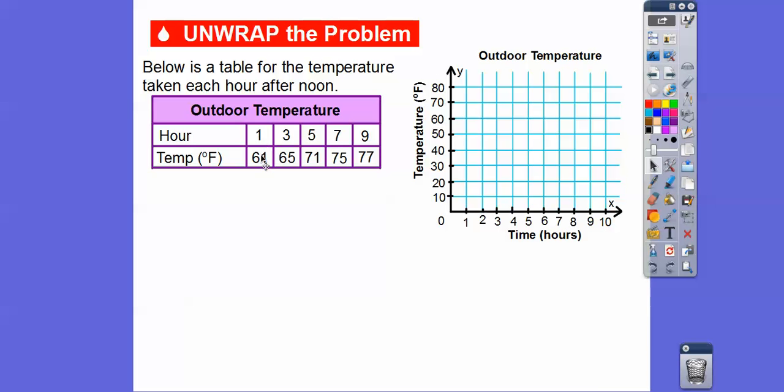The first hour is 61 degrees. The third hour is 65 degrees. You'll notice right here, this is our x-axis. Typically if you see a table that's written like this, the top row is your x-axis and the bottom row is your y-axis. Remember, x, y comes in alphabetical order. Since x comes before y in the alphabet, then the first set of numbers is typically our x's and the second set of numbers is typically our y's.